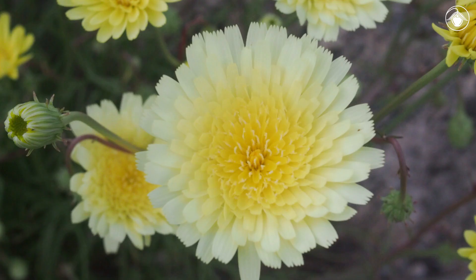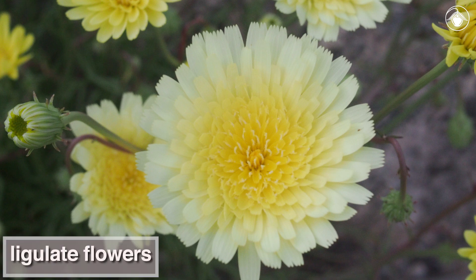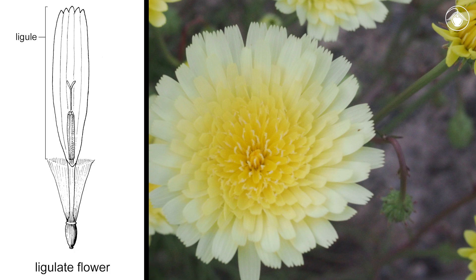In Malacothrix glabrata, the individual flowers are all ligulate flowers, meaning they each produce both pollen and seed, and each have all petals fused into a strap-shaped corolla called a ligule.